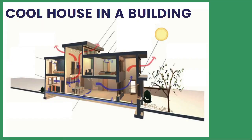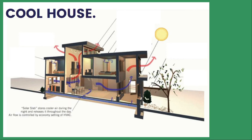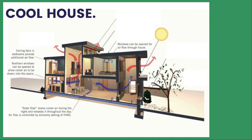At the building scale, the cool house concept is more integrated, with many systems interacting. For example, a solar slab stores cooler air during the night and releases it during the day. You can have air vents on the edges that draw air in, which then gets heated and releases into the building. Northern windows allow air to be drawn in, and ceiling fans — which can be solar-driven — help circulate that air throughout.